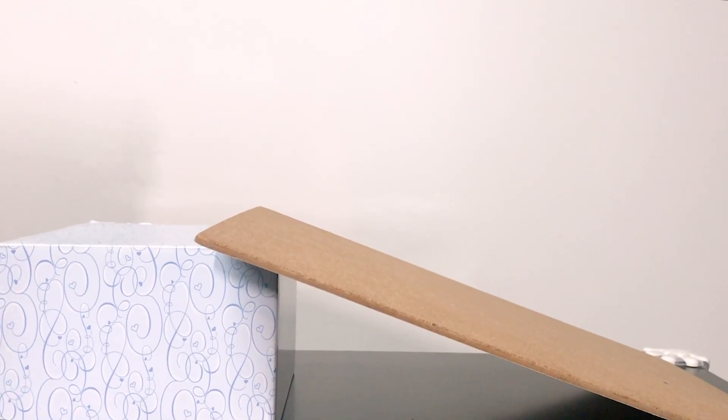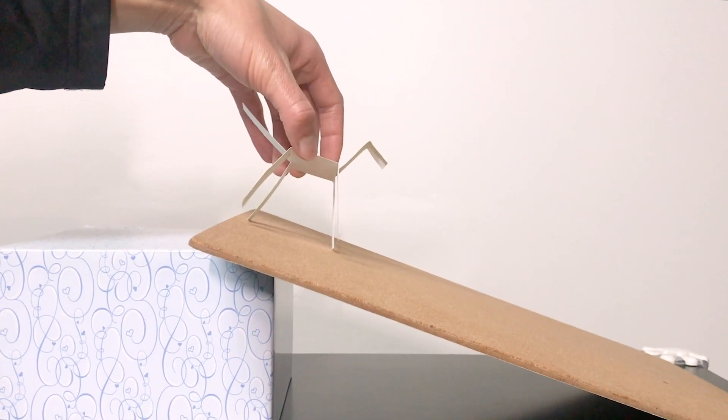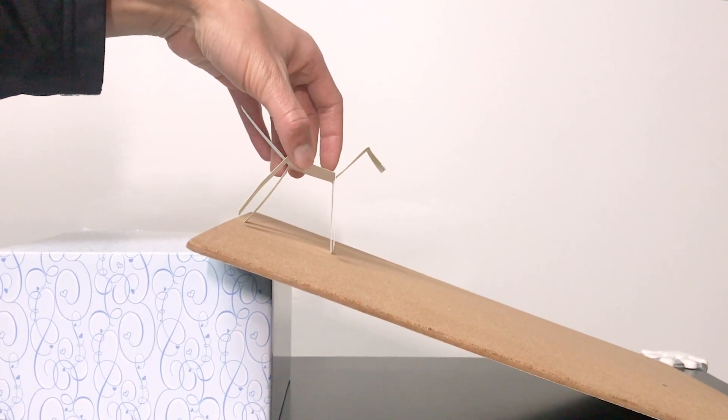Now we're ready for the dinosaur to walk. Just place the dinosaur at the top of the ramp. Place it on a little bit of an angle so that it begins rocking motion and then release.